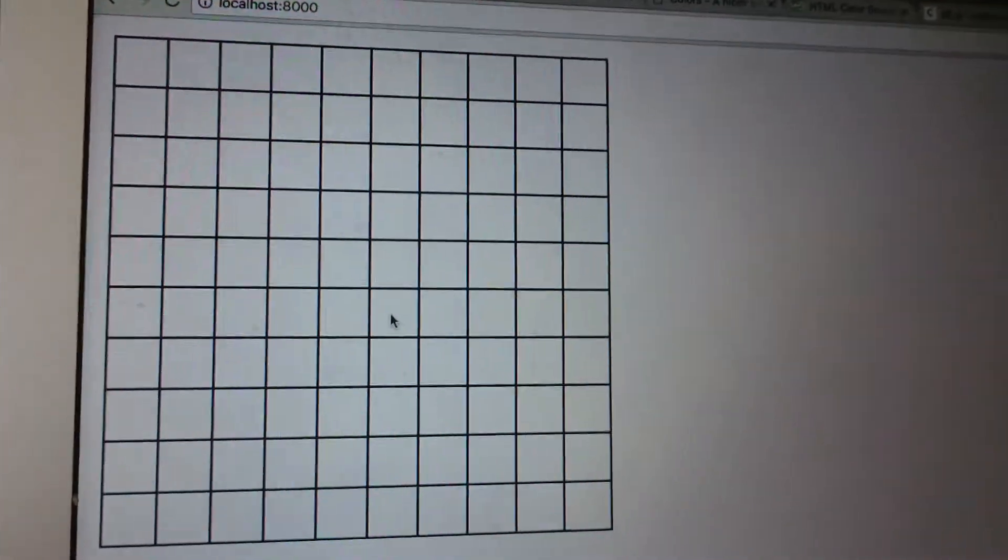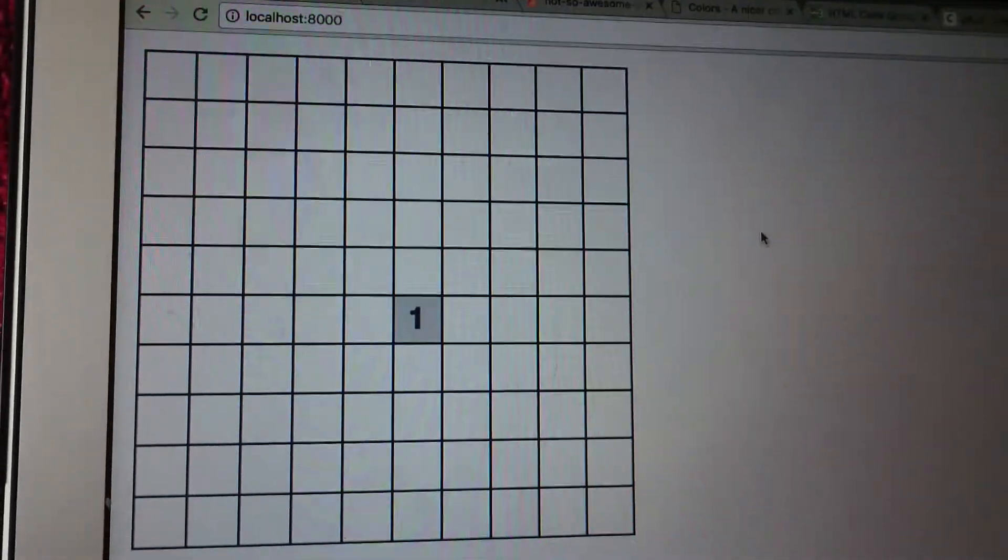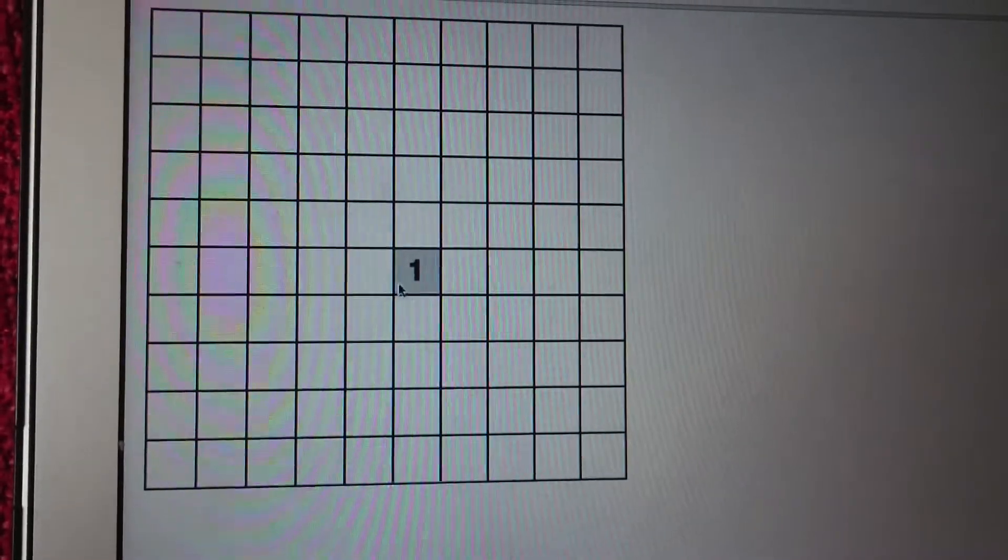The rules are what? Can you show me? Yeah. Let's see. If I click on a cell, you see a text appears. A number appears.